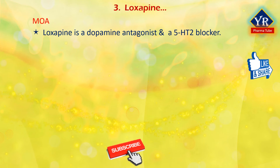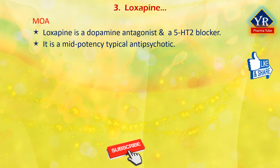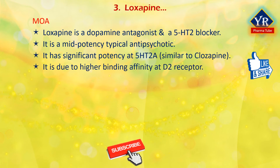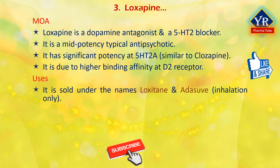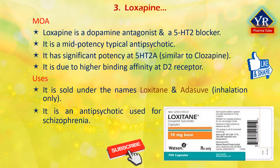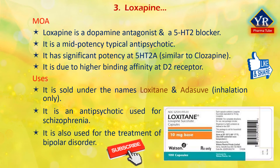Loxapine is a dopamine antagonist and also a serotonin-5-hydroxytryptamine blocker. Some authors say loxapine is a mid-potency typical antipsychotic. However, unlike most other typical antipsychotics, it has significant potency at the 5-hydroxytryptamine-2A receptor, which is similar to atypical antipsychotics like clozapine. The higher likelihood of extrapyramidal symptoms with loxapine compared to clozapine may be due to its higher affinity for the dopamine receptor, compared to clozapine which has one of the lowest binding affinities at the D2 receptor for any antipsychotic drug. Loxapine is sold under the brand names Loxitane and Adasuve, and is used primarily in the treatment of schizophrenia and bipolar disorder.